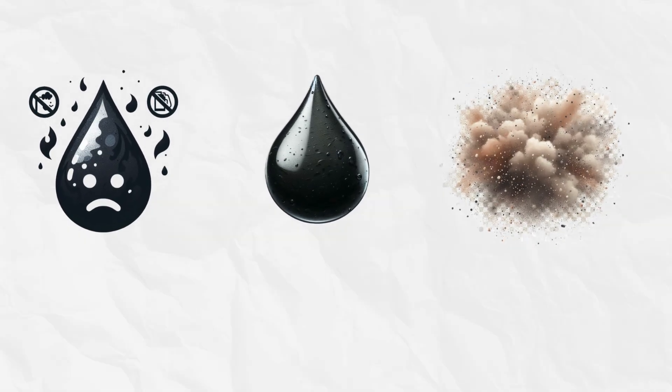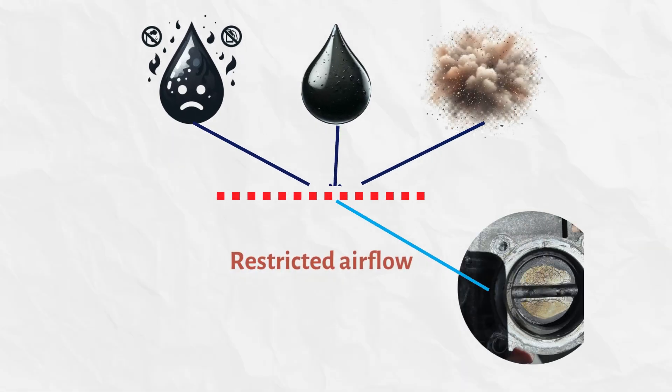Fuel, oil, and airborne contaminants leave deposits over time. These deposits can reduce airflow and restrict the movement of the throttle plate, leading to drivability issues.